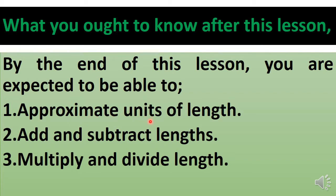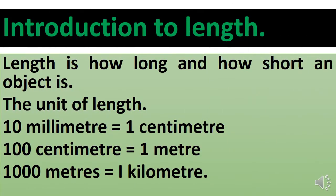To approximate is to round off to the nearest whole number — either to the nearest tens, nearest hundreds, or to the nearest thousands. We will also add and subtract lengths, and multiply and divide lengths. Length is how long and how short an object is.